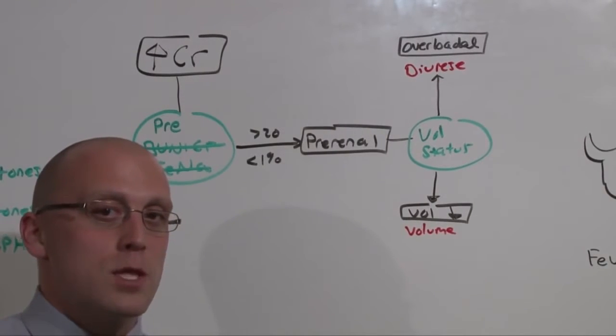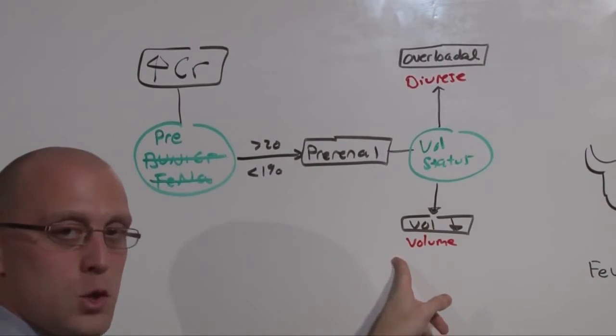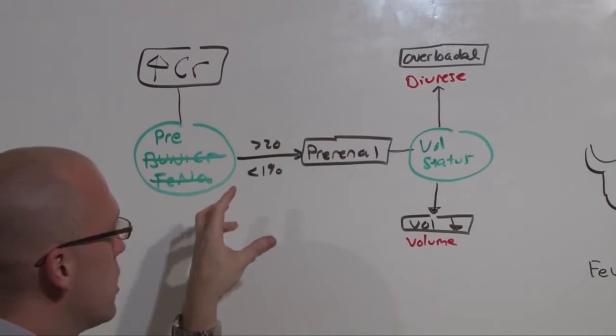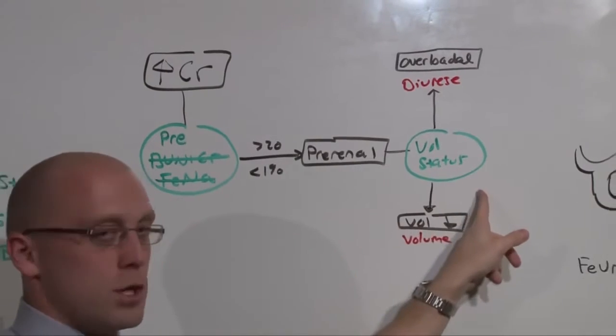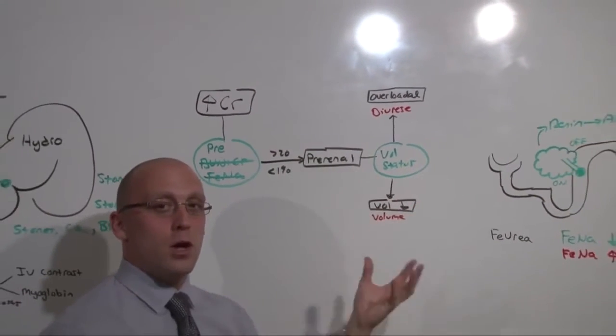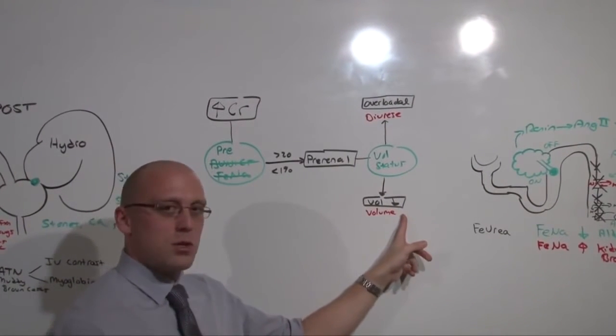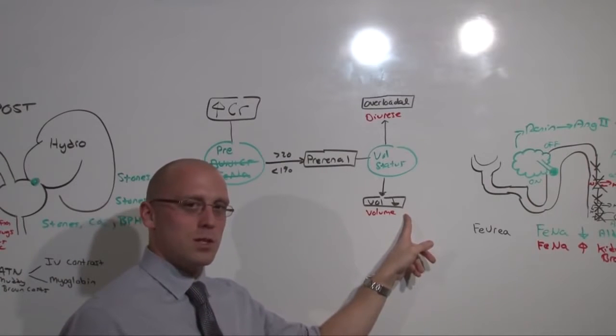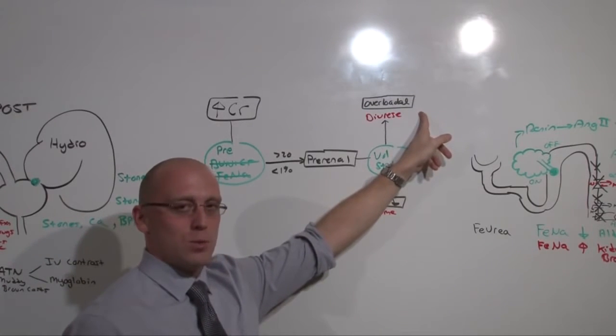Also, people make the mistake of saying, if the FENA is low, then give volume. So, to avoid all these pitfalls, simply start by assessing, is it pre-renal or not, by assessing their volume status. If they're volume neutral, that's difficult, get some studies. But, if they're obviously intravascular down, give them some volume and recheck the BMP. If they're obviously volume overloaded, diurese them and check a BMP.